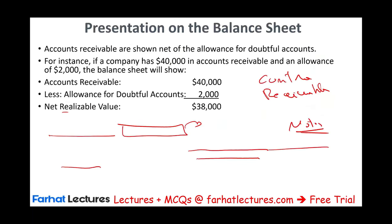The aging of receivable is another accounts receivable method. Each group of receivables is assigned a specific percentage for estimating bad debt, reflecting the likelihood of non-payment. We break down the receivables into different groups based on their age: 1–30 days late, 31–60 days late, 90 days late, over 90 days late. For each group we project a percentage. The estimated bad debt for each group is computed by multiplying the receivables in that group by the corresponding percentage, then all groups are summed to determine the total target.